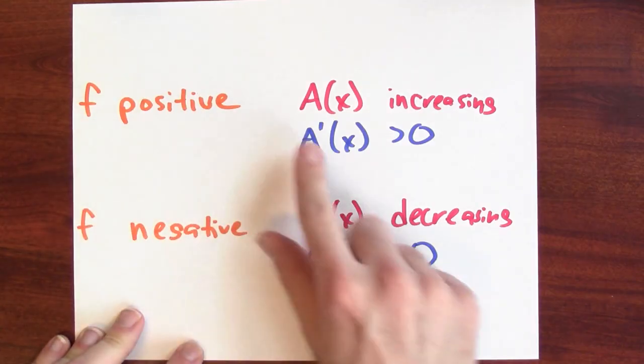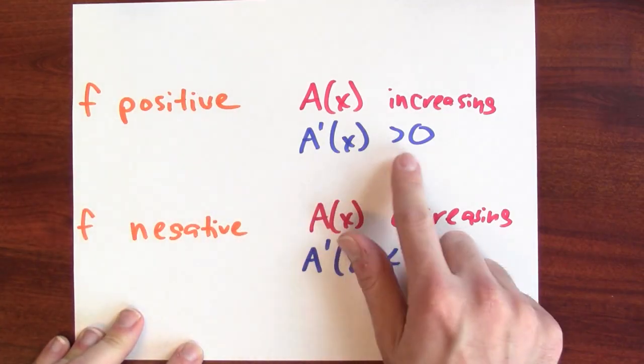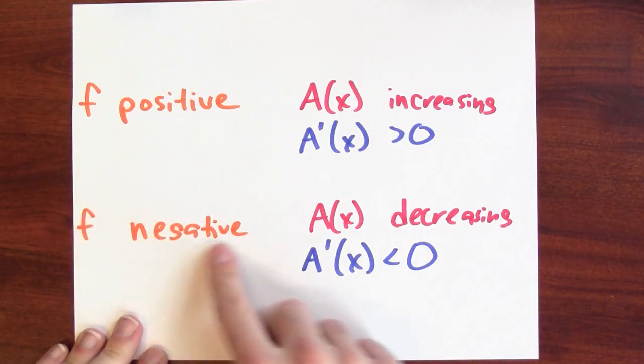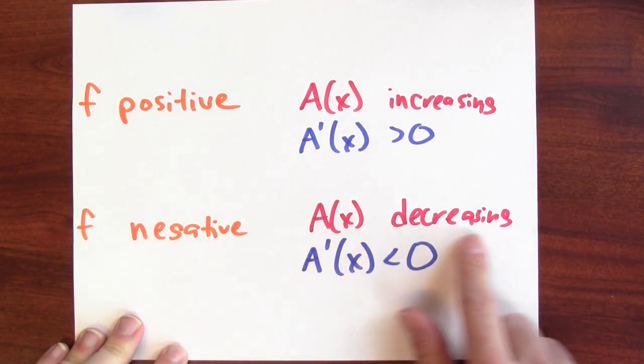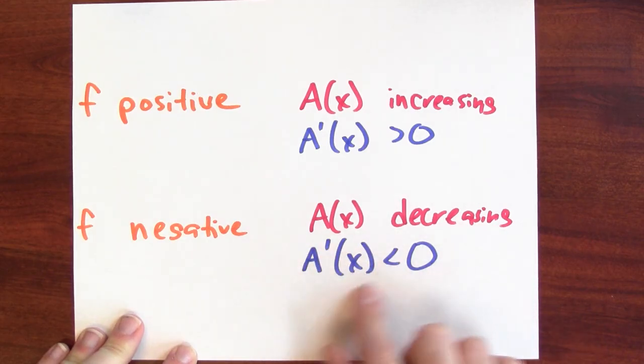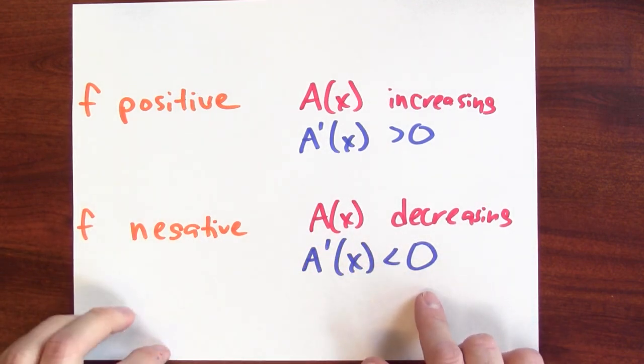So integrand's positive, derivative of accumulation function is positive. The function that I'm integrating is negative, the accumulation function is decreasing. The derivative of the accumulation function is negative. Integrand negative, derivative of accumulation function also negative. This is our first hint at the fundamental theorem of calculus. Some sort of relationship between derivatives and integrals.